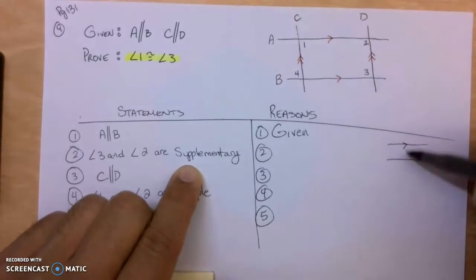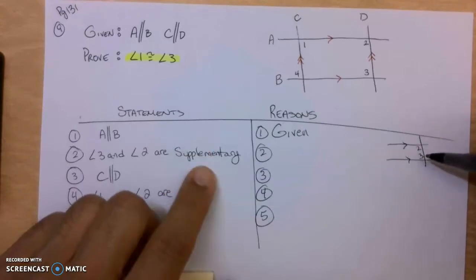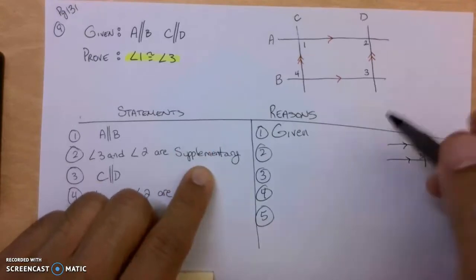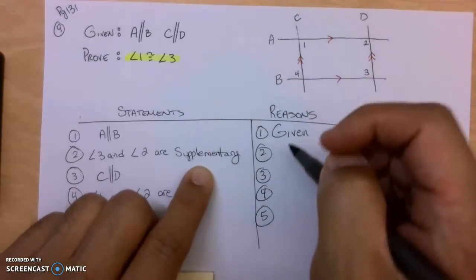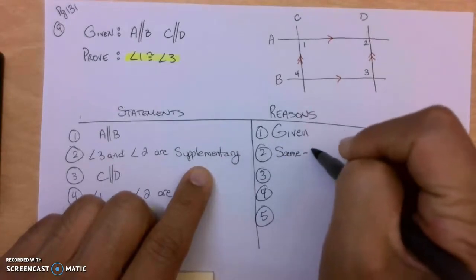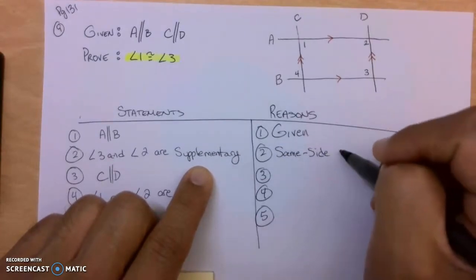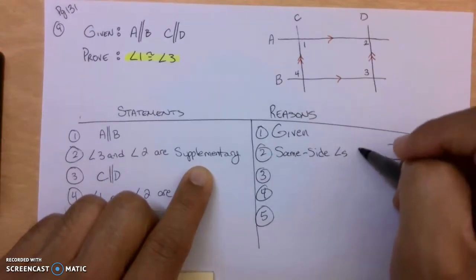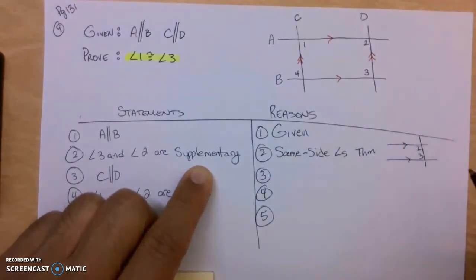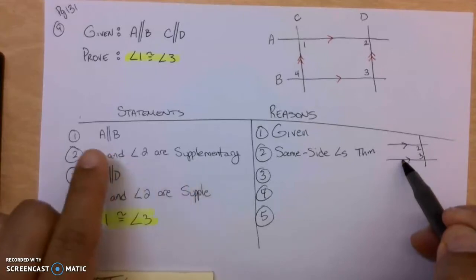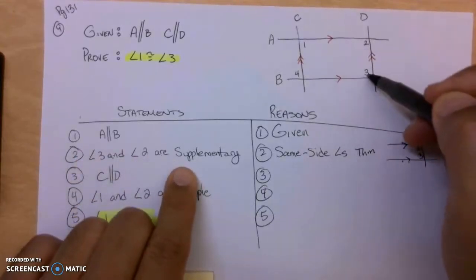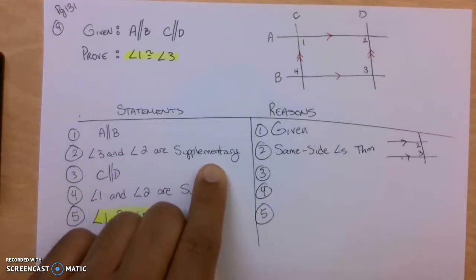Because the lines A and B are parallel, angles 2 and 3, and I just kind of made a miniature version, these two are supplementary. They add up to 180. Why is that? Well, this is called Same Side Angles Theorem, which basically says if two lines are parallel, then the same side interior angles add up to 180. Same side interior.